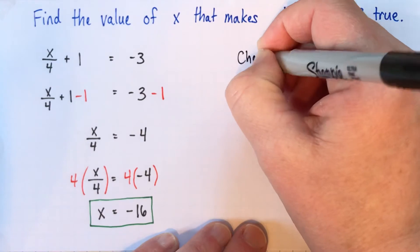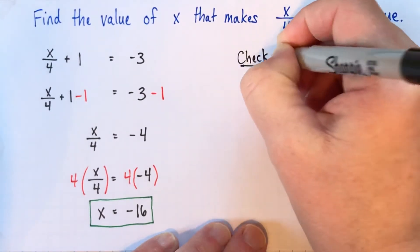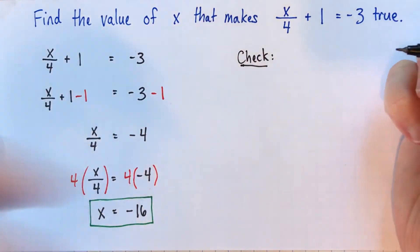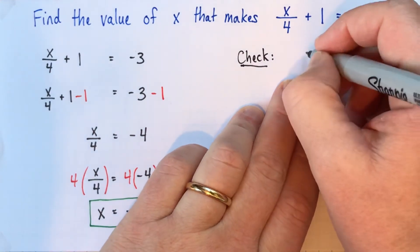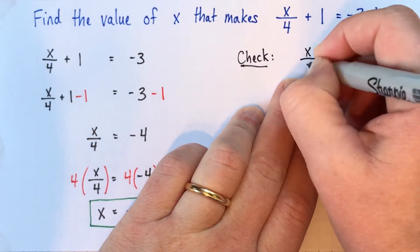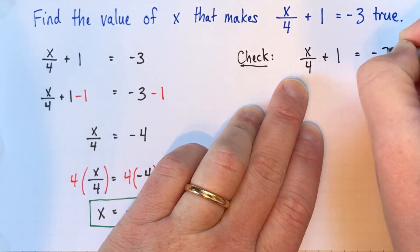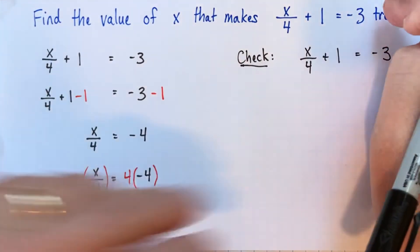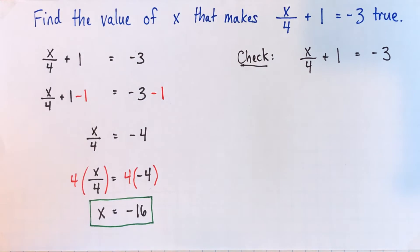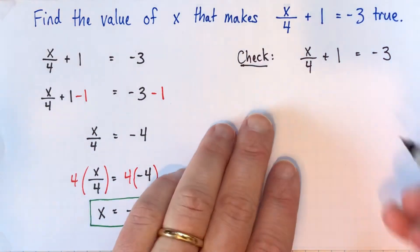So first of all, we'll write down that we're just checking, so someone looking at our work doesn't get confused. And I'll copy the equation down here too. x divided by 4 plus 1 equals negative 3. Make sure you copy it from the original source just in case you made a mistake copying it down. Alright, so what we want to know is, are these two things the same when we replace our x with negative 16?